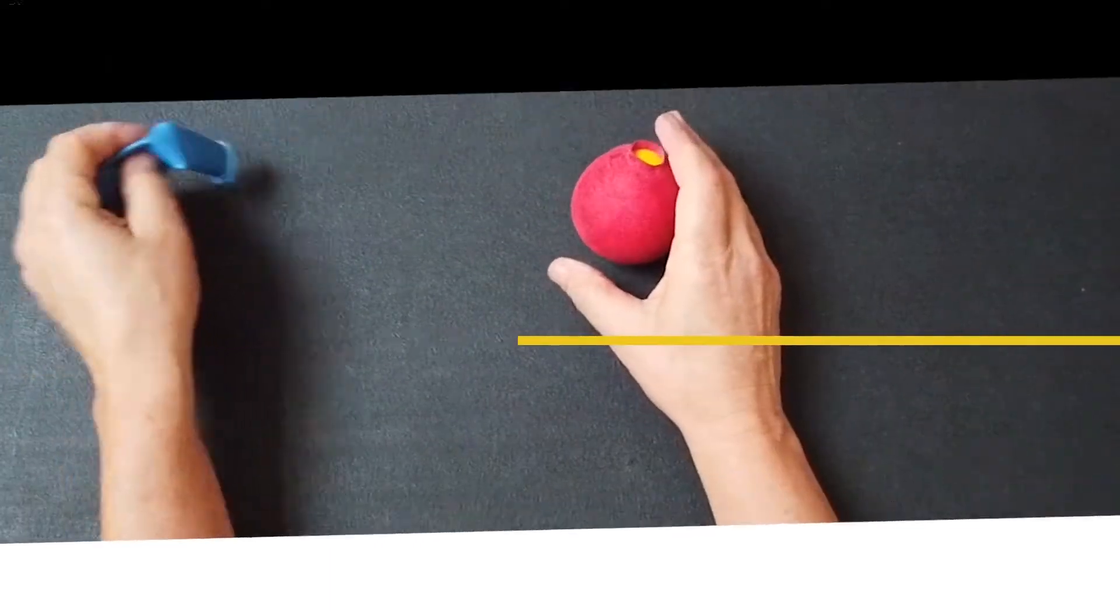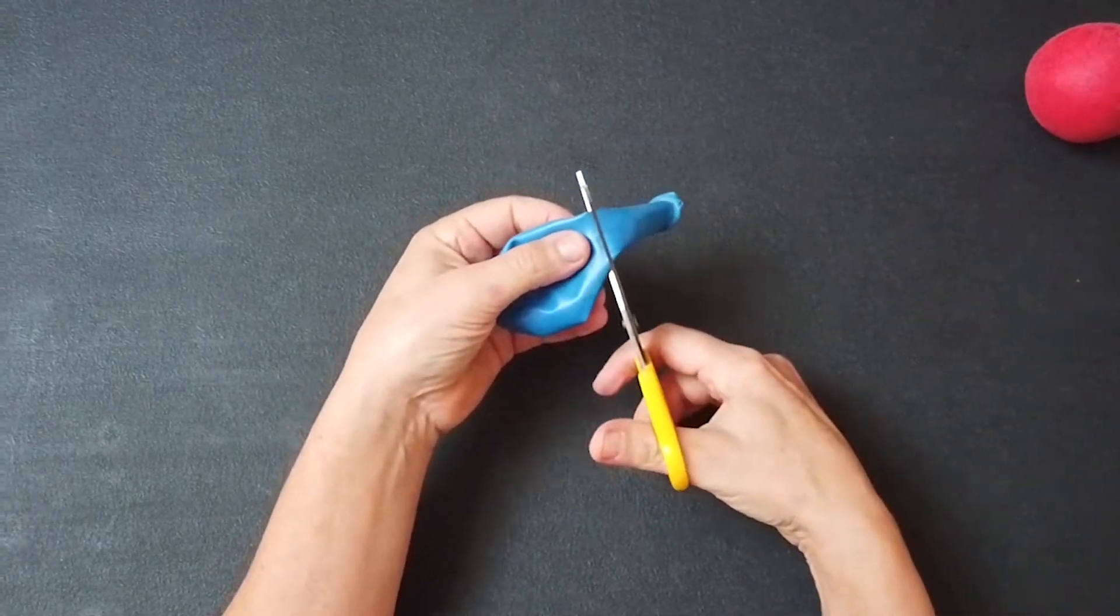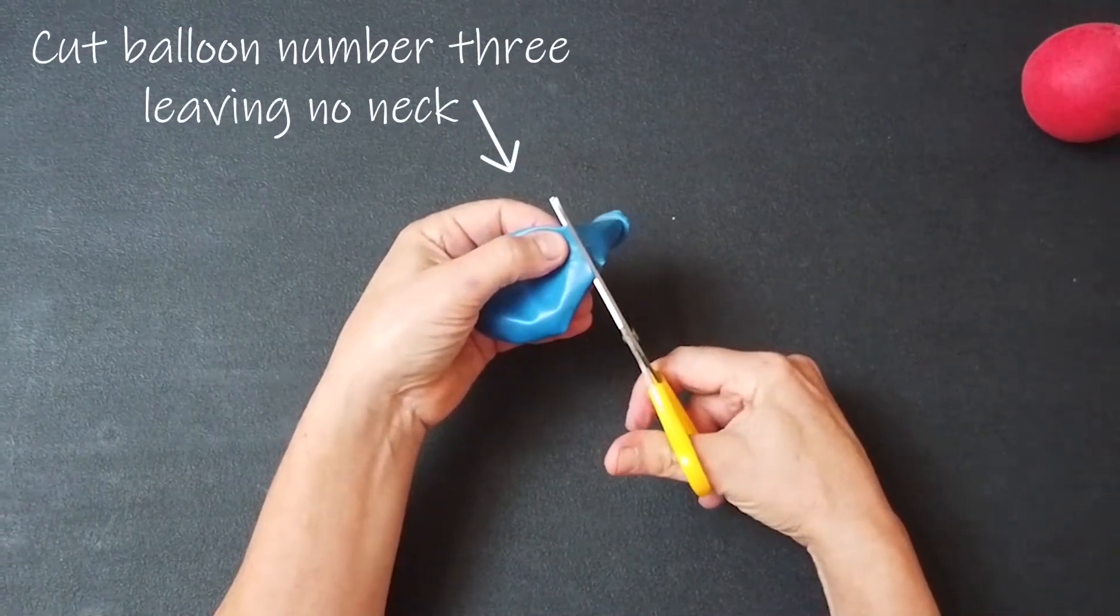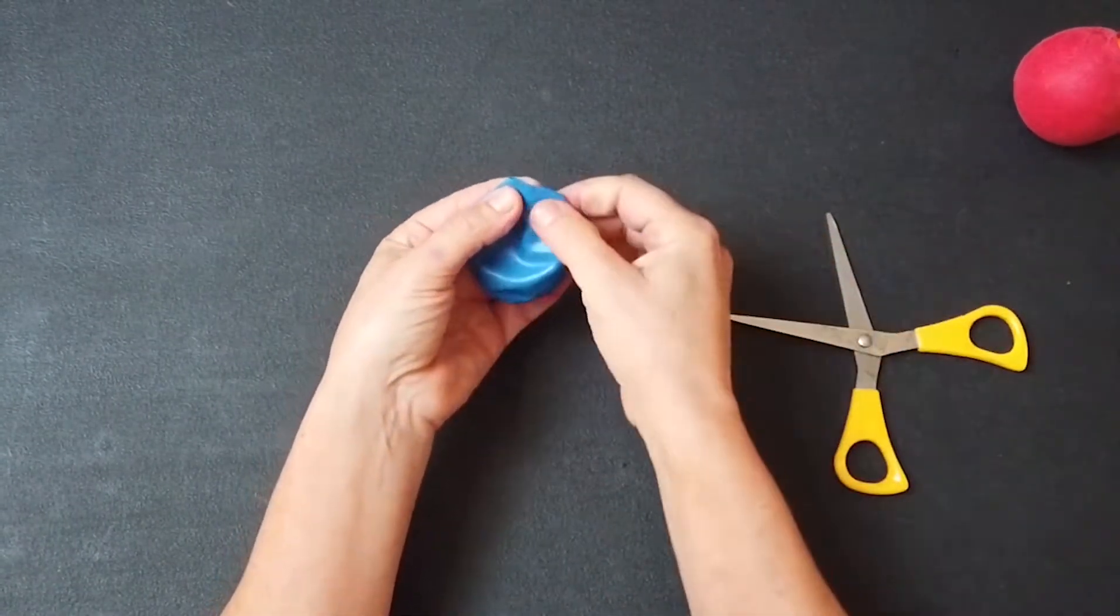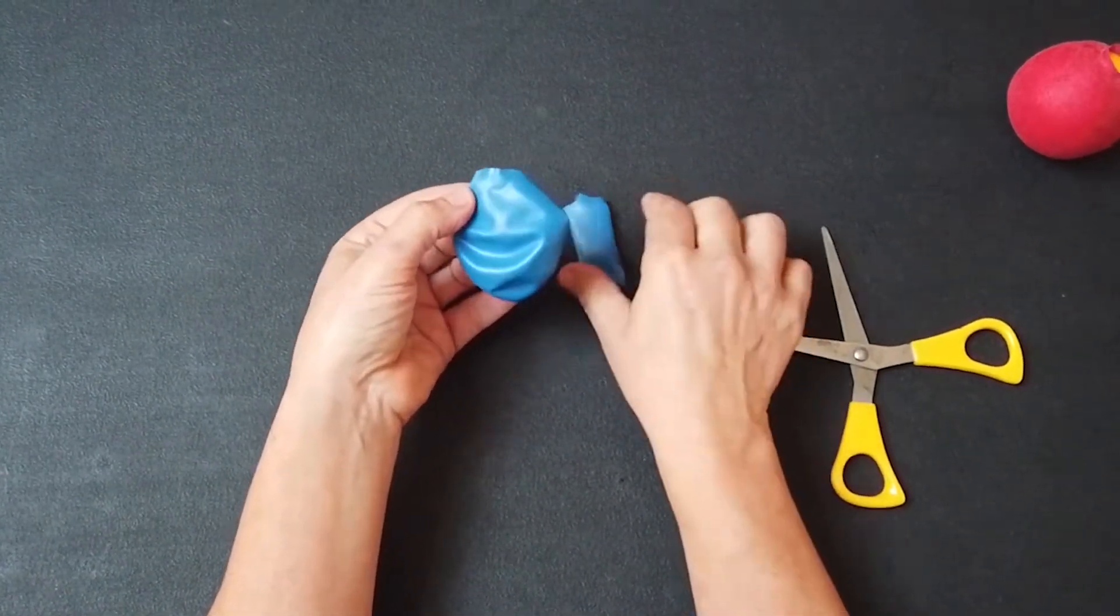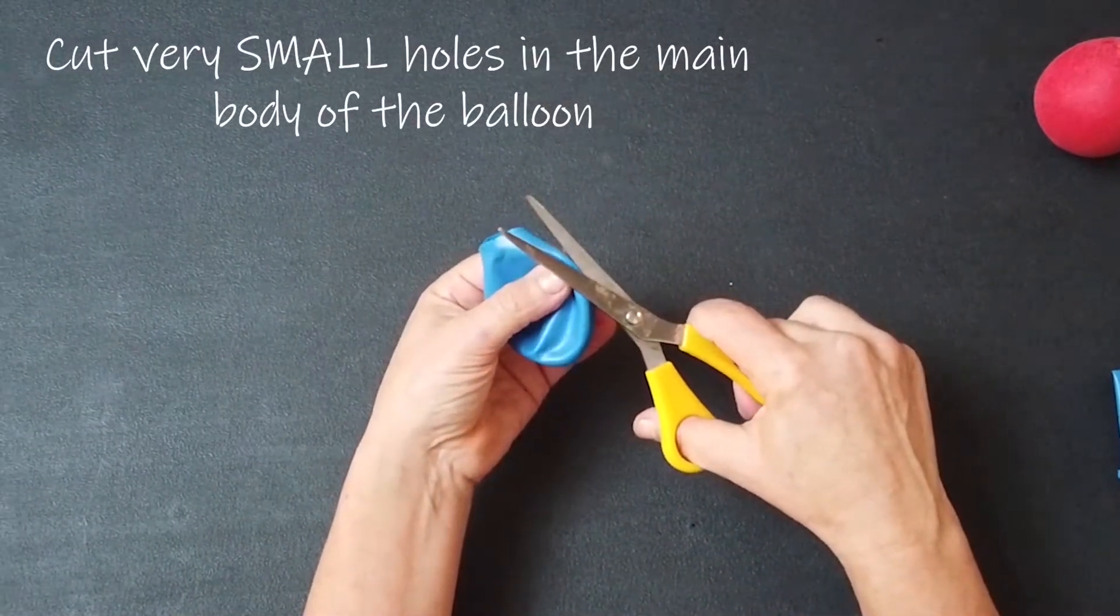The third layer we're going to do is mainly for decoration. You can do three layers and just this layer you could simply cut it off round, which we're going to do so you're not leaving much of a neck. You could just put that on or you can cut a few just very small holes because they'll stretch open.